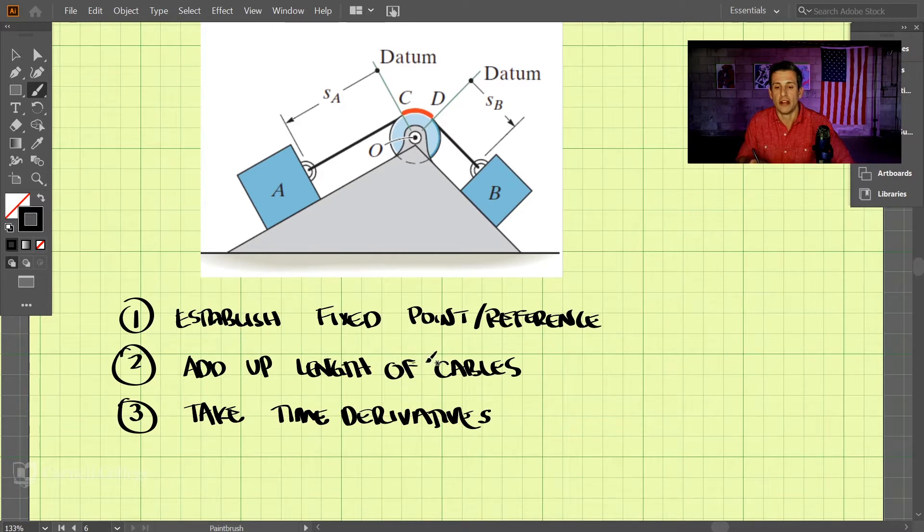And then we add up the length of the cables based on this fixed reference point. So we have SA being the position that block A is away from point O, and SB being the position that block B is away from point O. And then we have the length C to D here, which is the small length of cable over top of the pulley.